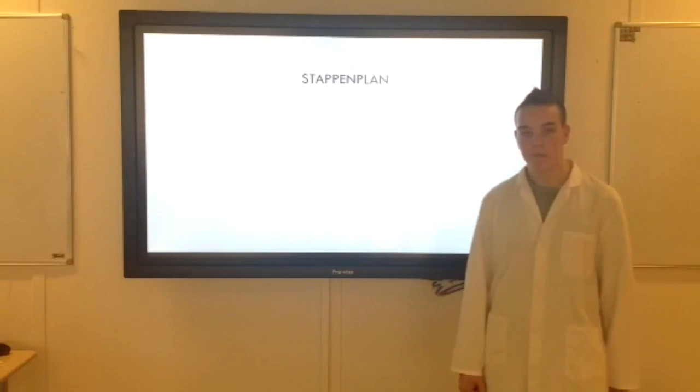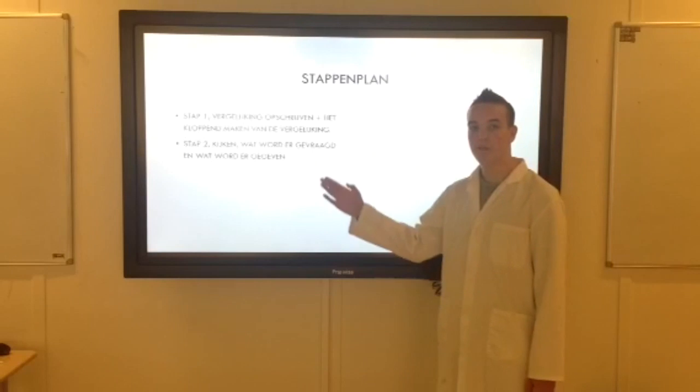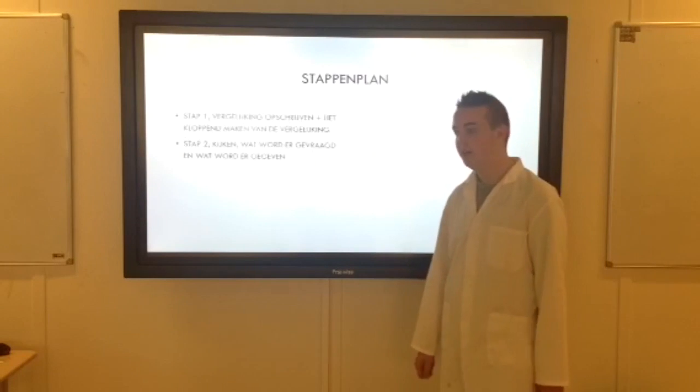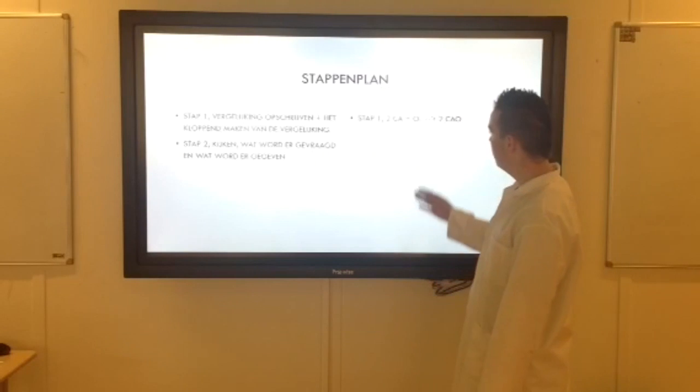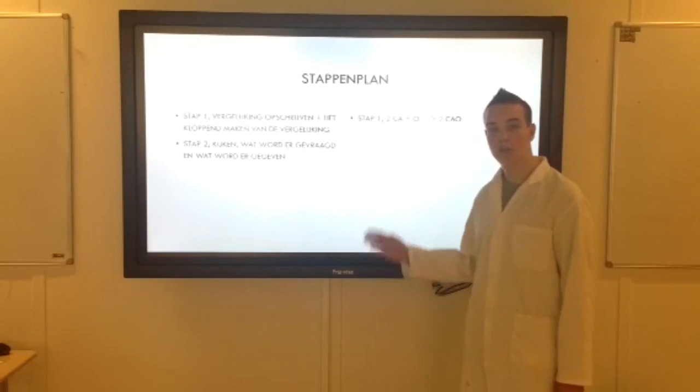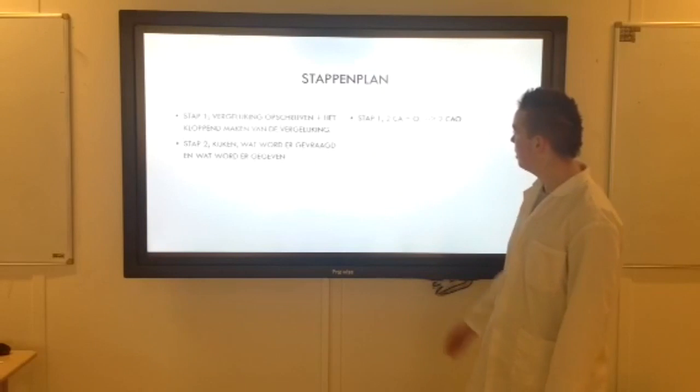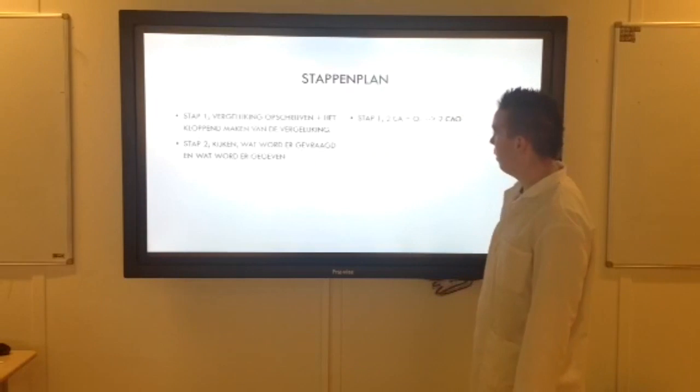Dan hebben we ook een stappenplan. De eerste twee stappen heb ik al even op het bord gezet. We gaan eerst de vergelijking opschrijven en dan kloppend maken. En daar heb ik een voorbeeld bij. Dit is een voorbeeld. Ik heb calcium plus zuurstof gedaan en dat wordt calciumoxide. En dan heb ik het meteen kloppend gemaakt. Dus 2Ca + O2 wordt 2CaO.